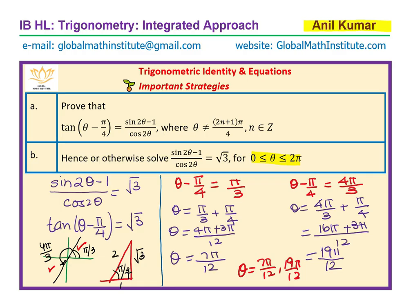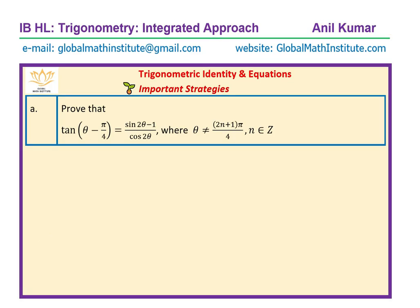We did the second part first, just to show you that if you get stuck proving the identity, at least solve the equation and get your answer. Now let's go to Part A, which is an identity. We need to show that tan(θ - π/4) equals (sin 2θ - 1) over cos 2θ.